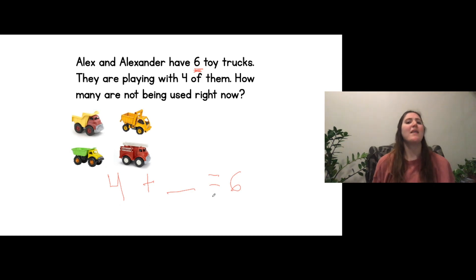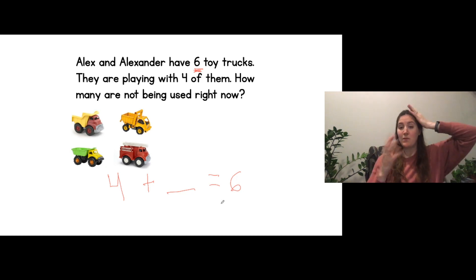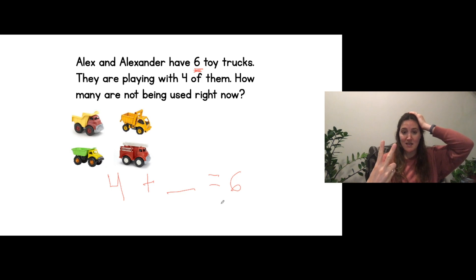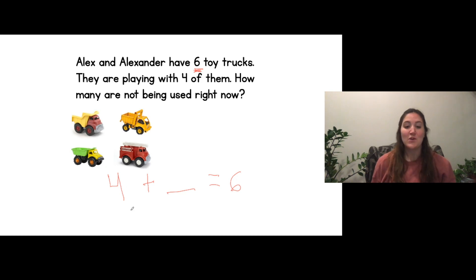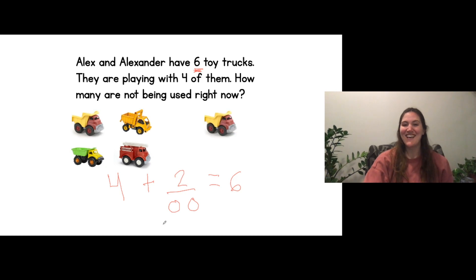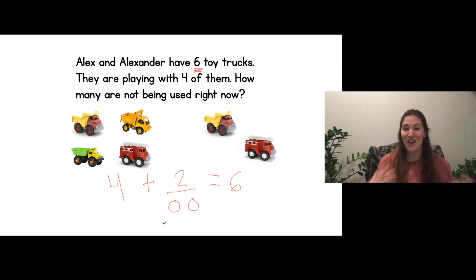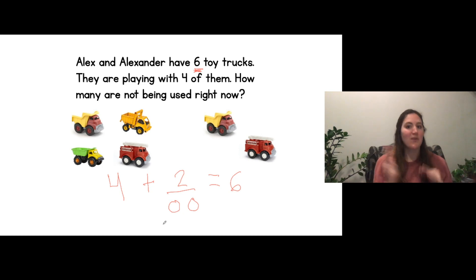How many are they not using that equals six altogether? So we can count on from four until we get to six. Put the number four in your head: four, five, six. How many toy trucks are they not using? Let's also draw circles to make sure: four, five, six. We were right! Two trucks are not being used right now. So Alex and Alexander have six toy trucks but they're only using four of them. Two of them are not being used. Four plus two equals six.